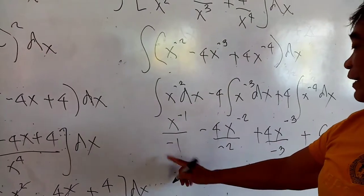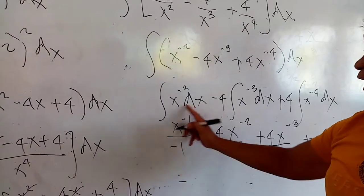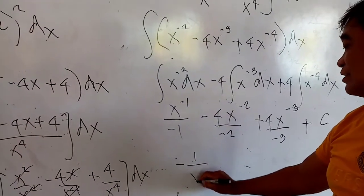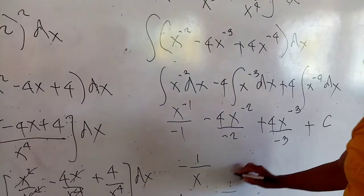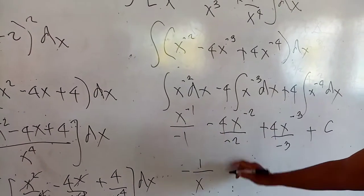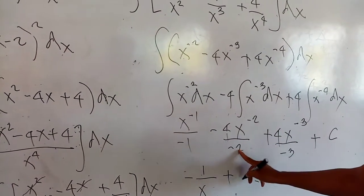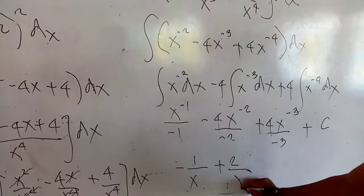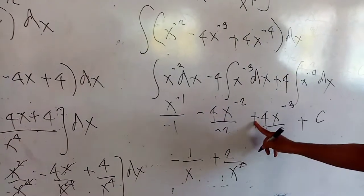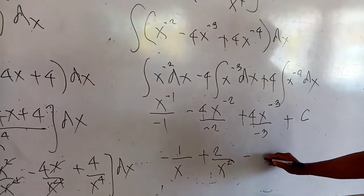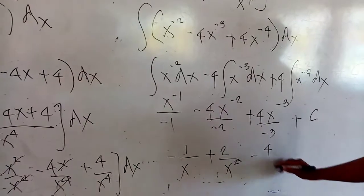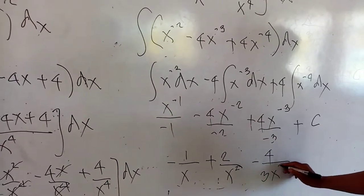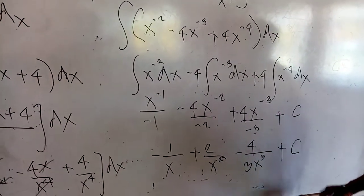To divide: positive divided by negative will be minus. I bring the negative exponent down to make it a positive exponent — that will be 1 over x. Negative divided by negative will be plus; 4 divided by 2 will be 2. This is a negative 2 exponent; I bring it down — that will be x to the positive 2. Positive divided by minus will be minus — 4, all over 3, times x to the positive 3 — plus the constant of integration c.